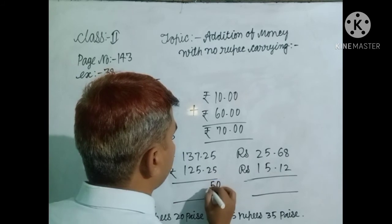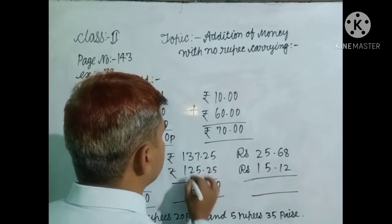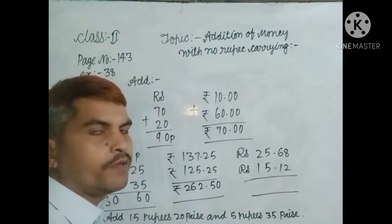And here 5, 5, 10. 2, 2, 4. 1, 5. 1, 5. 7, 5, 2, 1. 3, 2, 5. 1, 6. 1, 1, 2. That means 262 rupees 50 paise.